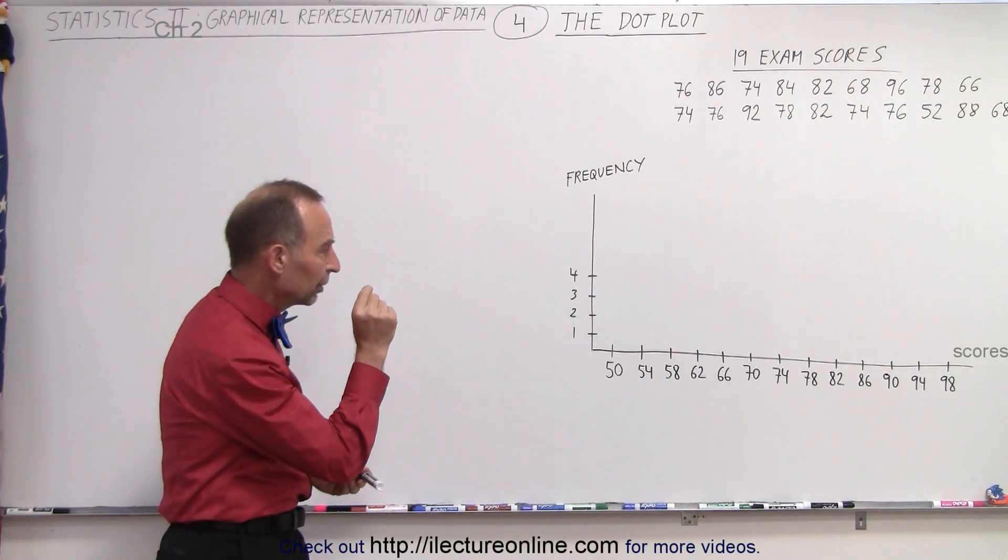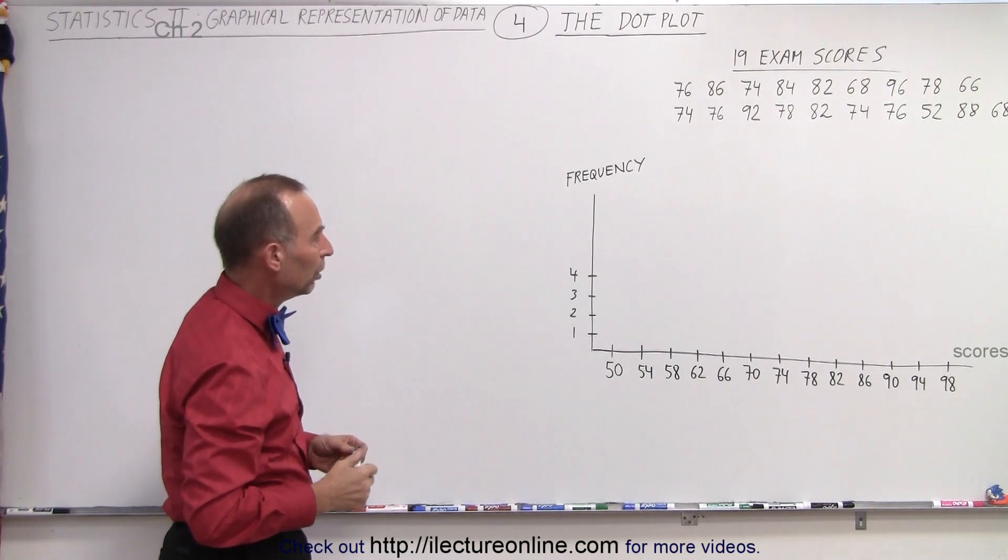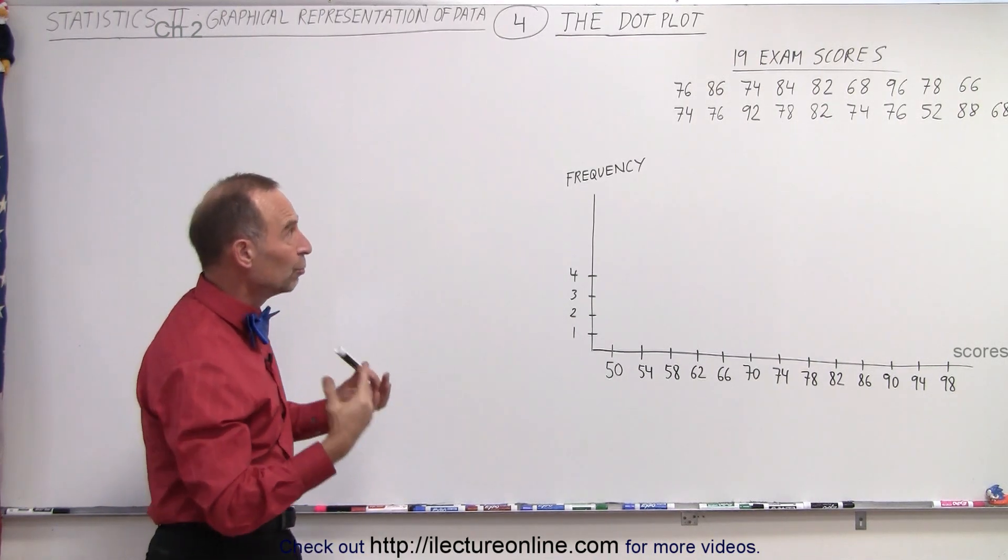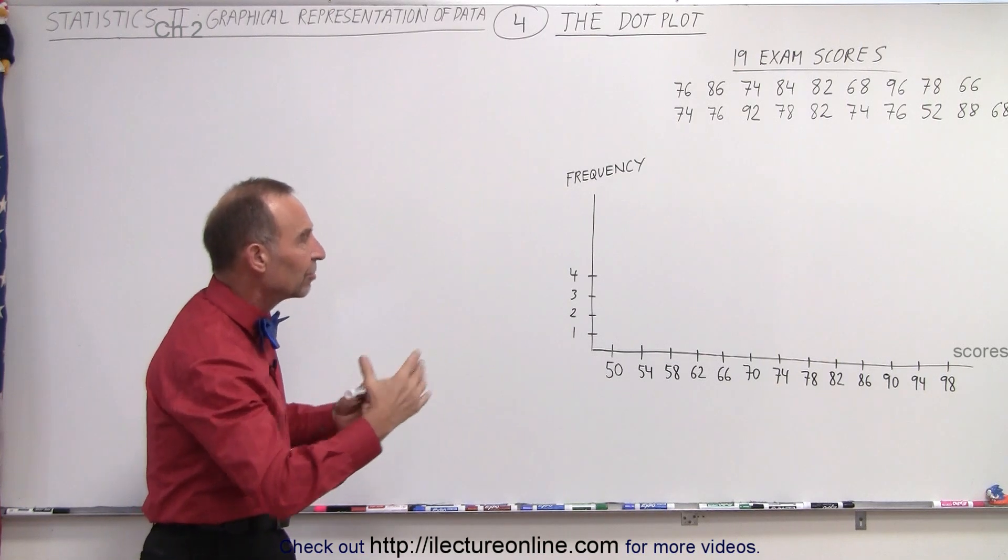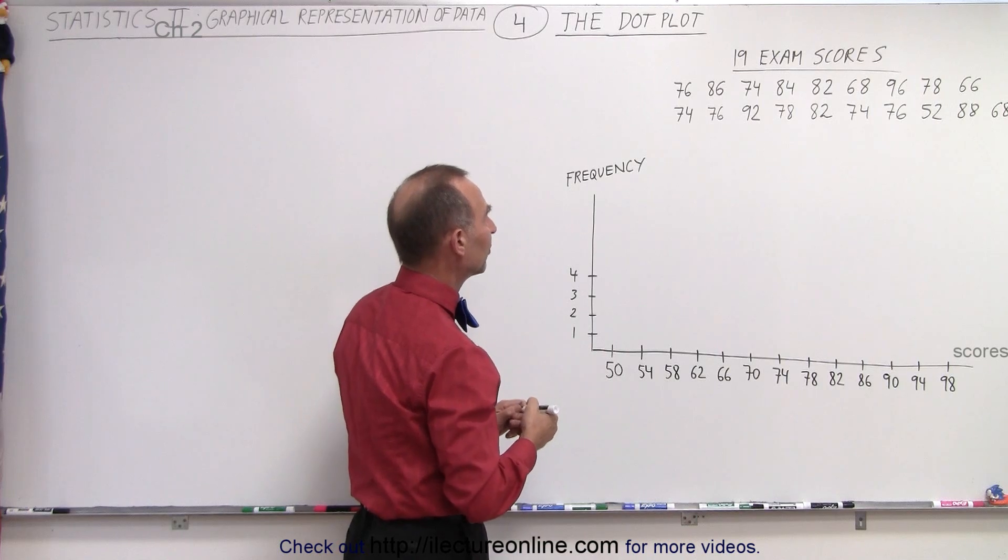So what we're going to do is we're going to put a little dot on the graph for every specific score, all 19 exam scores, to see which type is most frequent and where the data range kind of falls. So let's do that right here real time and see what happens.